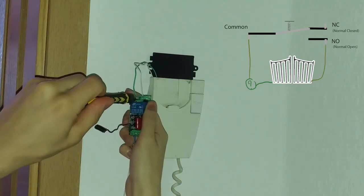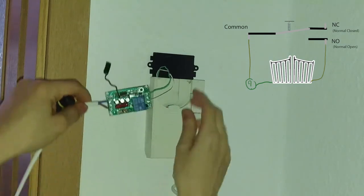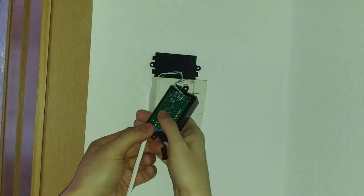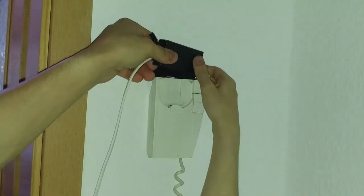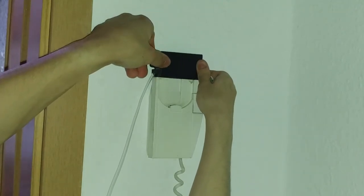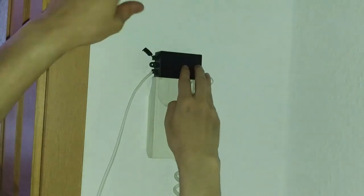We just need to connect one of the wires to the com or common and the other one to the NO contact. After that we just need to close everything and don't forget to leave the antenna outside for a better range. Connect the module to power and it's finally time to test it.